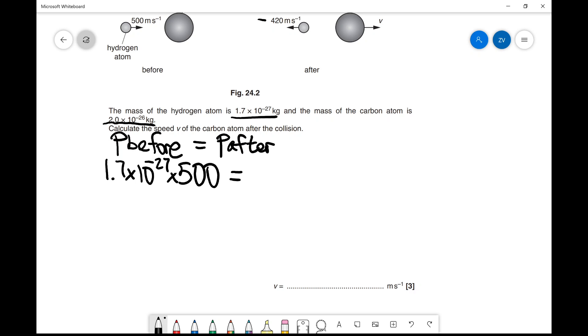The total momentum after is composed of two components: the hydrogen atom and the carbon atom, which is now also moving. Let's start with the hydrogen atom.